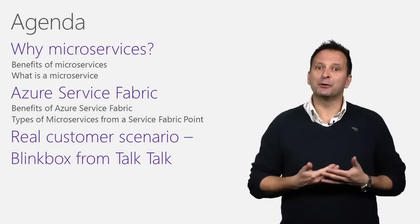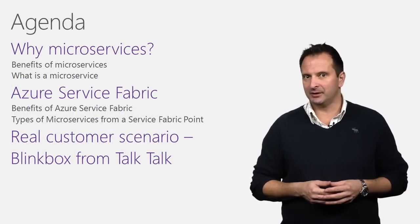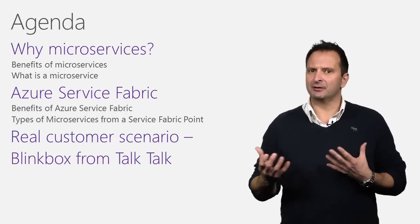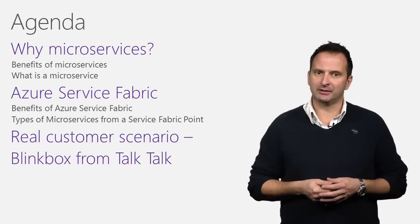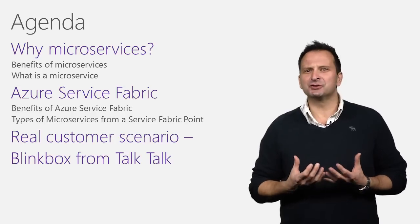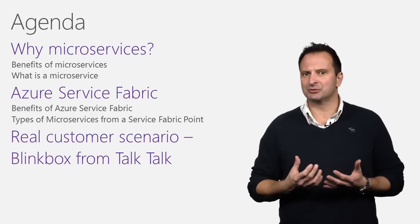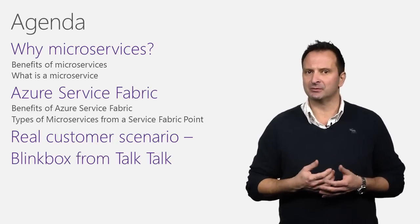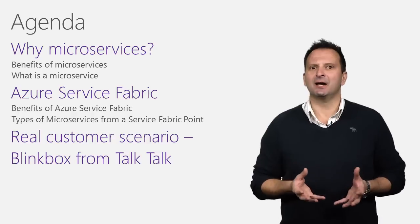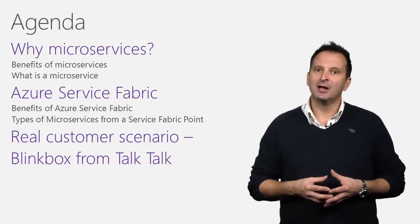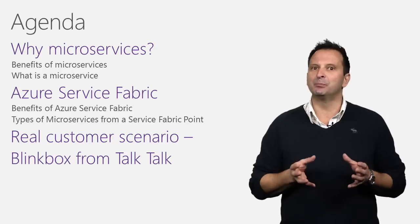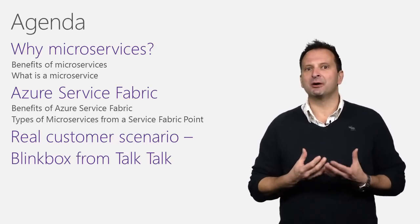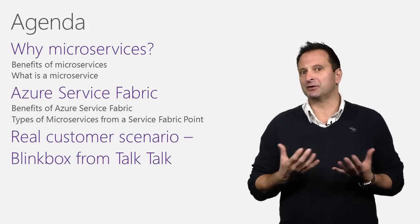As for the agenda, first we'll look at why microservices architectures are gaining so much momentum and popularity in the IT industry. We will start by comparing a traditional monolith architecture with a microservices architecture. After that comparison, it should be quite obvious why microservices are gaining so much momentum. We'll wrap up the microservices section by looking at some characteristics of a microservice. We then spend the second half of this session looking into Service Fabric and why it is such a great platform for building microservices-based applications. And we'll wrap up by talking about a real-life customer scenario — Blinkbox from TalkTalk.